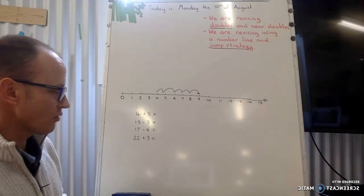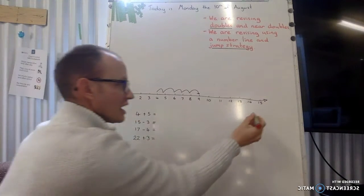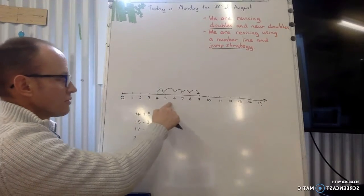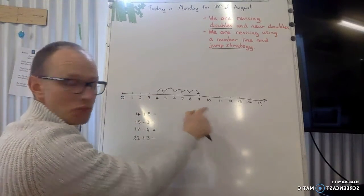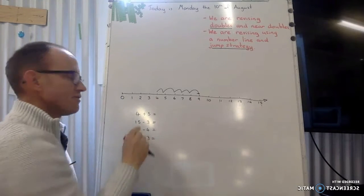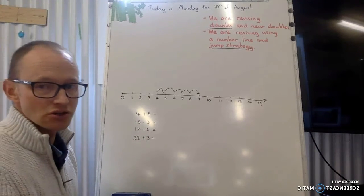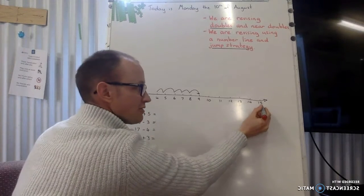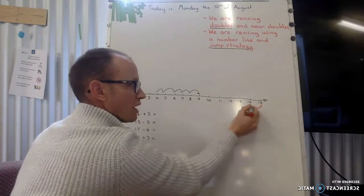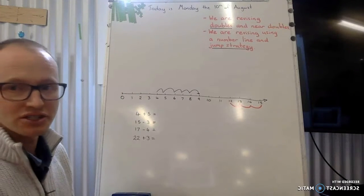15 take away 3. So here we start at the 15. Now when it was the plus, we moved to the right. When it's a subtraction, we move to the left. 15 take away 3. Now I know you could work it other ways, but again, using the number line strategies. At the 15, take away 3. 1, 2, 3. And that's it. The answer is 12.